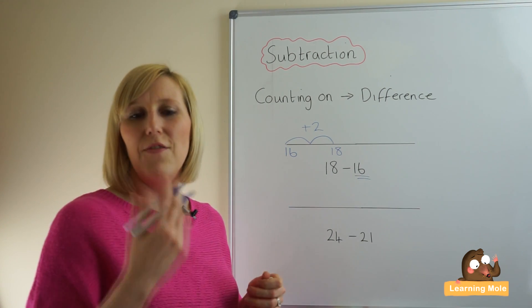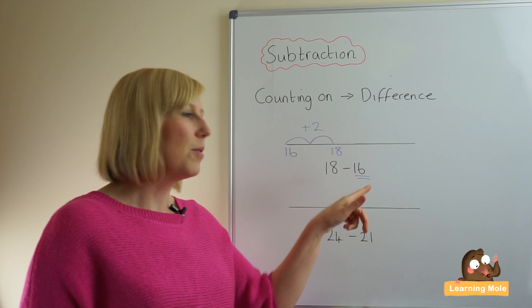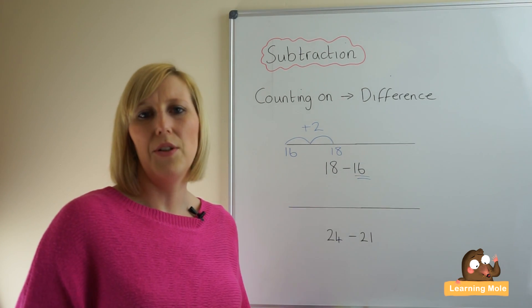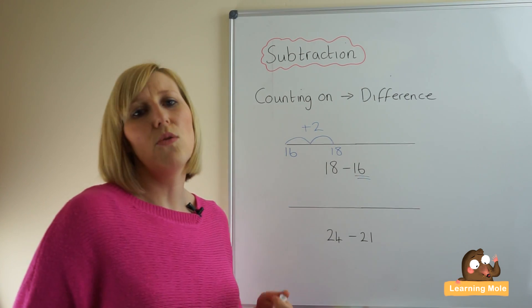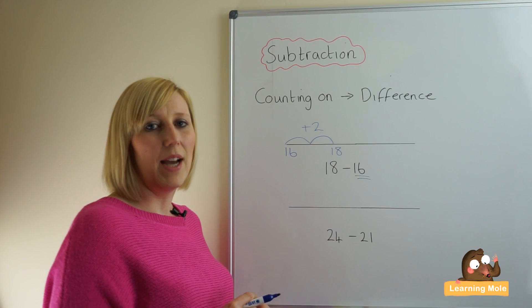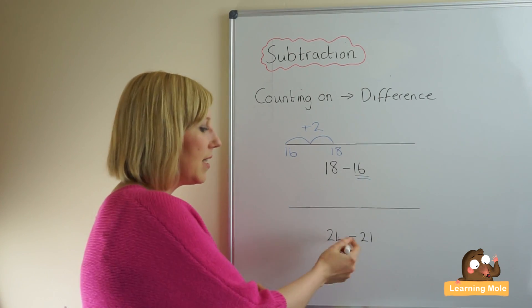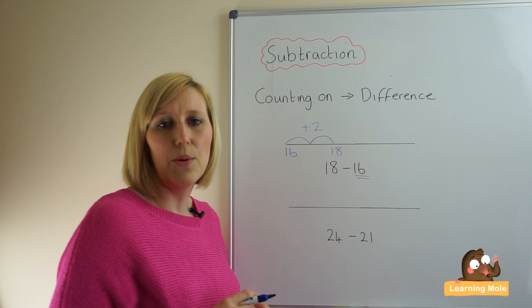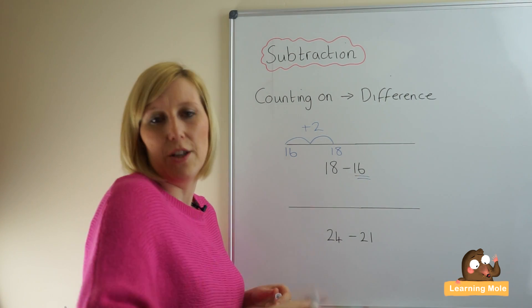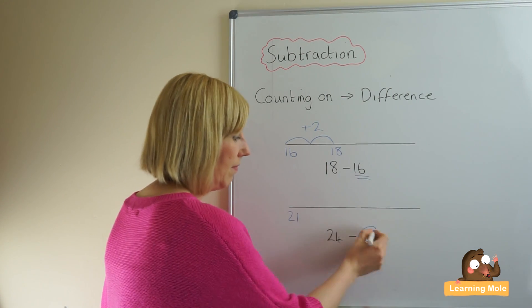If you were to count back it would take you a very long time and there's lots of opportunity for mistakes. Let me just go through that again. You're looking first of all at identifying: is this calculation suitable for this strategy? And yes it is because we've got the two numbers that are close together. We're identifying the smaller number because we want to count on to the bigger number, 21, and we're going to count on.